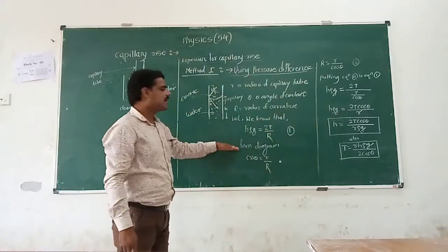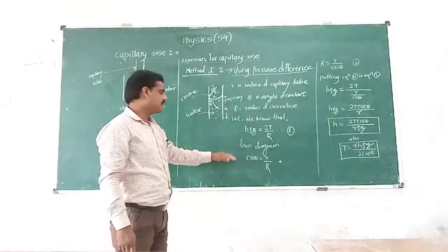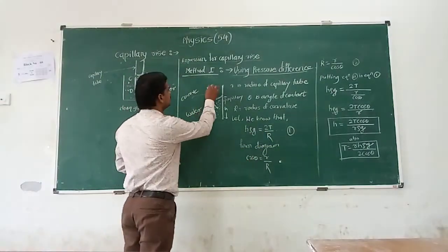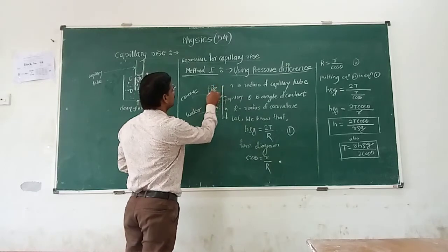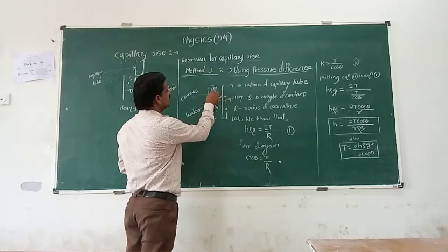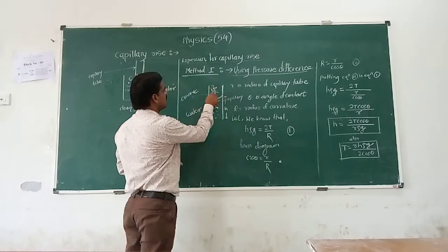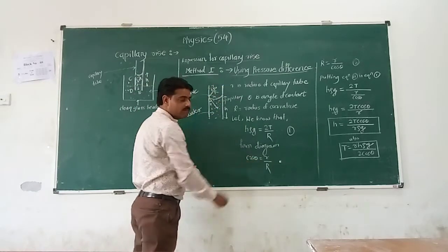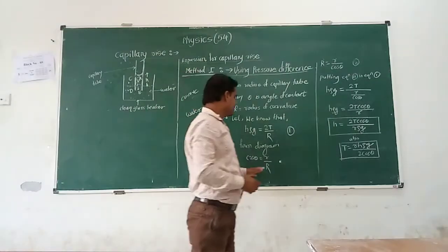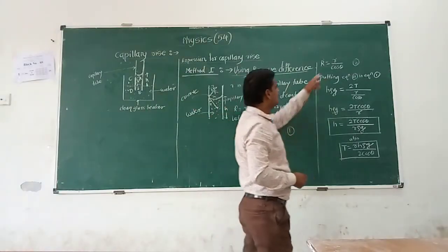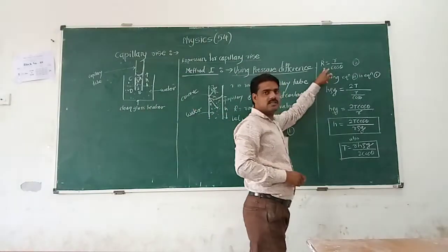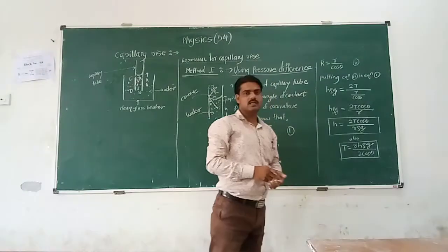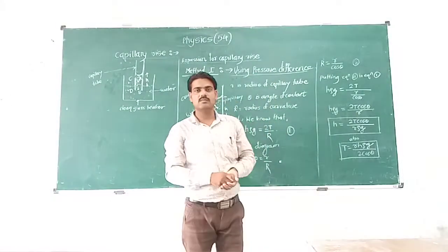From the diagram, cos θ = r/R. Therefore, we can write R = r/cos θ. This is equation 2.